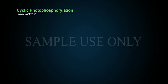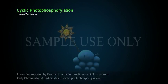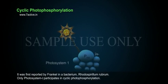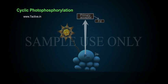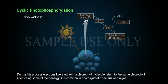Cyclic photophosphorylation was first reported by Frankel in a bacterium Rhodospirillum rubrum. Only photosystem 1 participates in cyclic photophosphorylation. During this process, electrons liberated from a chlorophyll molecule return to the same chlorophyll after losing some of their energy. It is common in photosynthetic bacteria and algae.